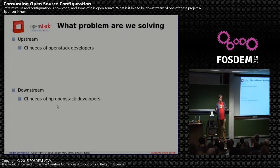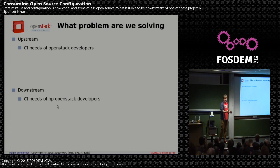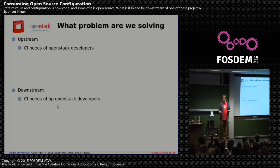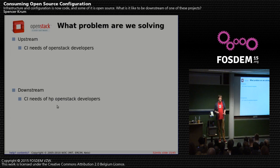Both teams are building CI infrastructure for OpenStack developers — upstream for the OpenStack community, downstream at HP for HP developers. HP has an OpenStack product called Helion. We take standard OpenStack, apply HP internal patches, and test them with HP internal CI — intended to be a close mirror of what happens upstream.